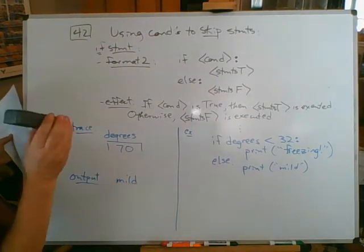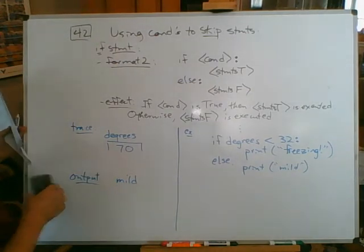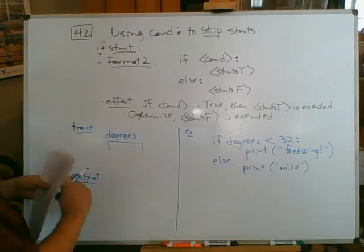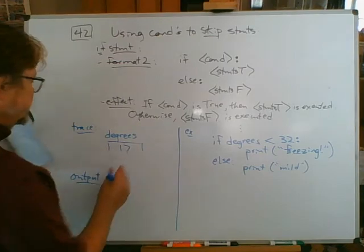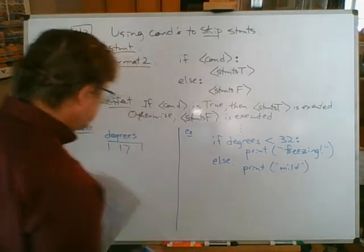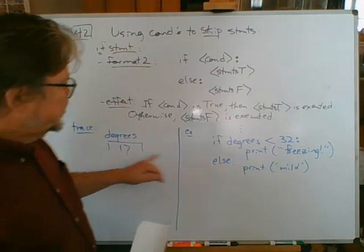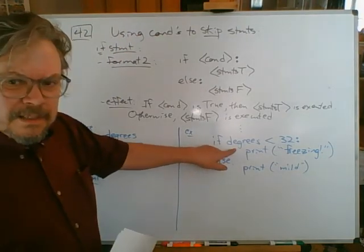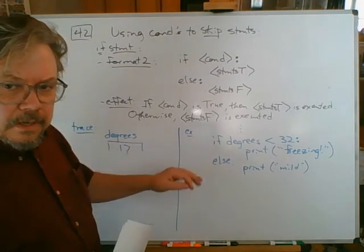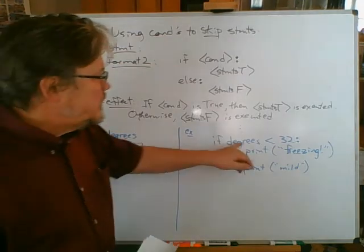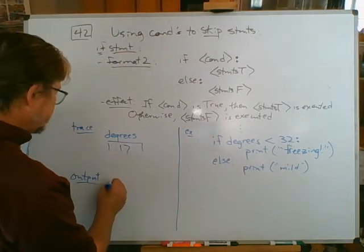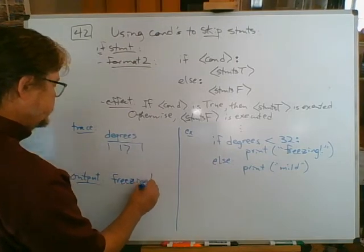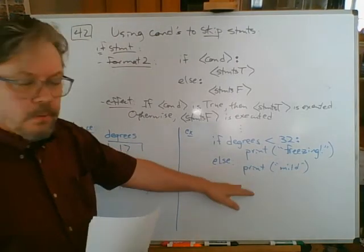Well, what if it is not 70? Let's look at the other execution path. What if I get here and it's not 70, it's 17? Let's try it and see. If degrees less than 32, it looks up the current value of degrees. What this does depends on the values of the variables involved. 17 is less than 32, so it's going to print freezing with an exclamation point. And it will not print mild.